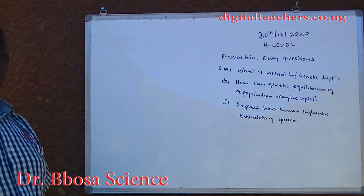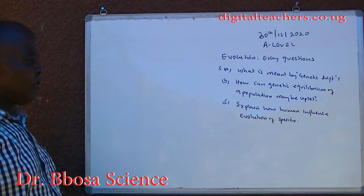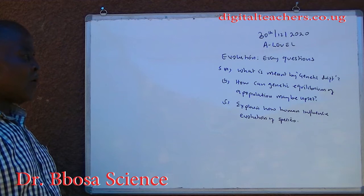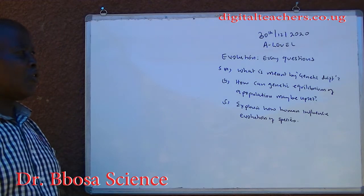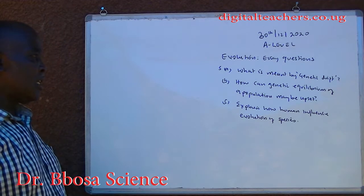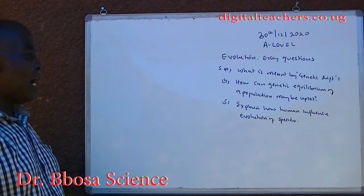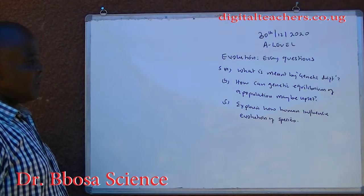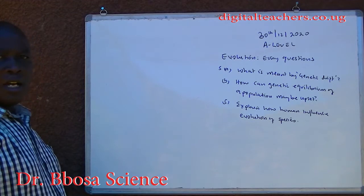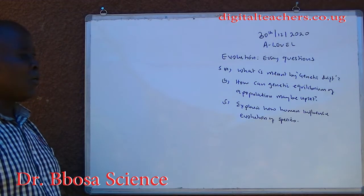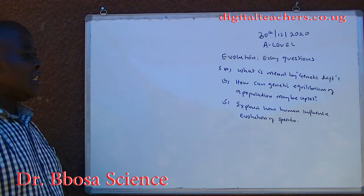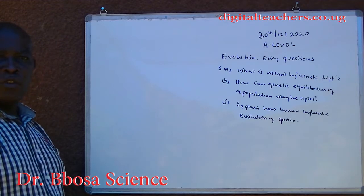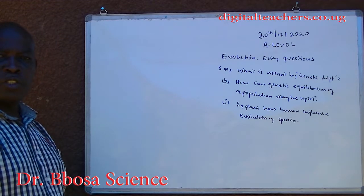Number 5. A. What is meant by genetic drift? B. How can the genetic equilibrium of a population be upset? C. Explain how humans influence the evolution of species.